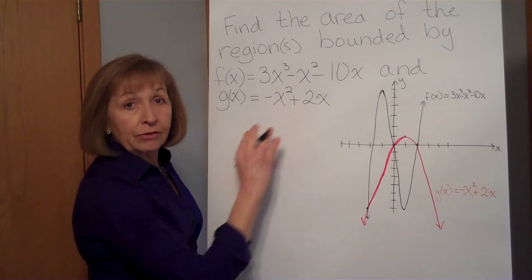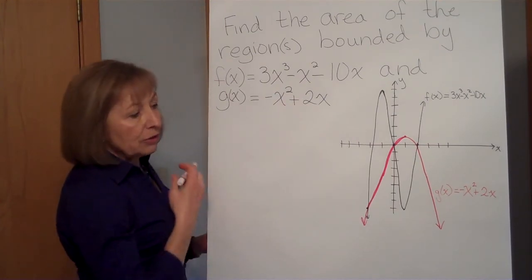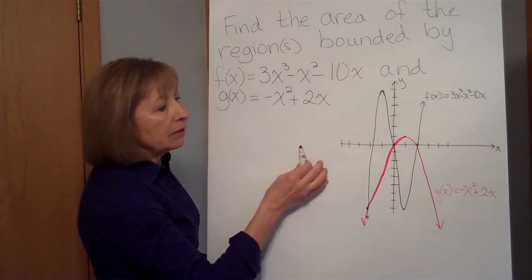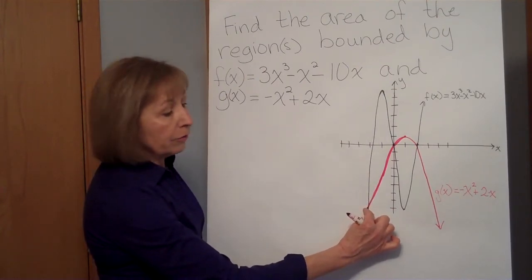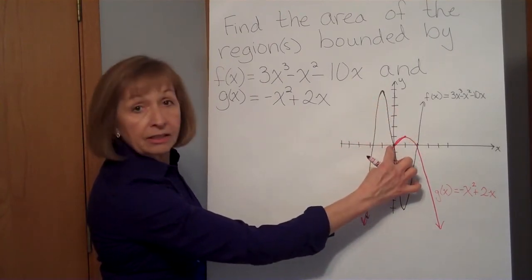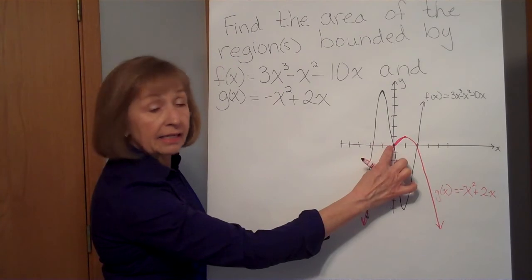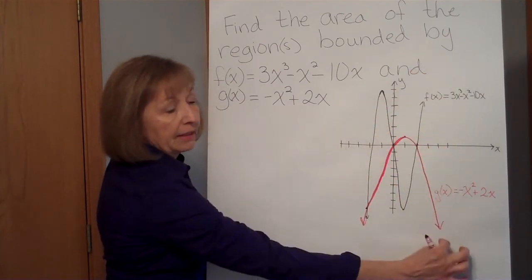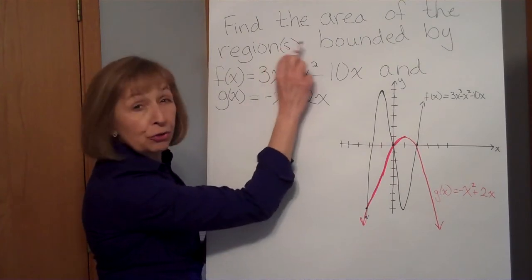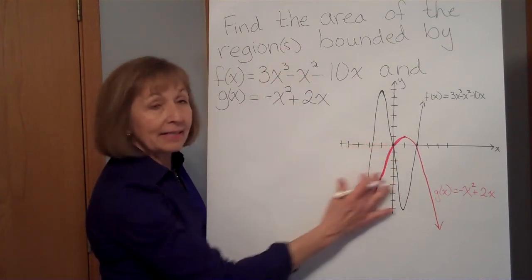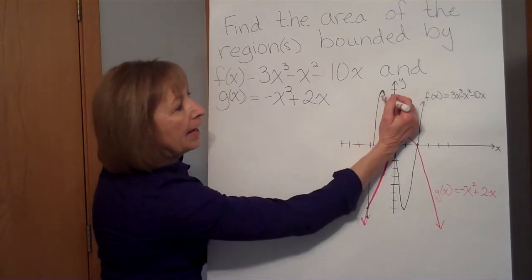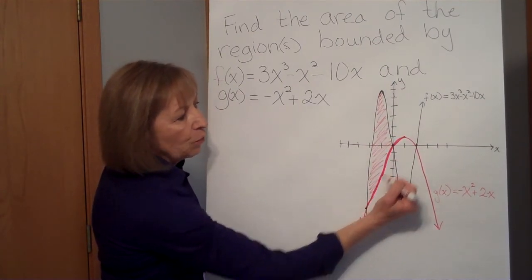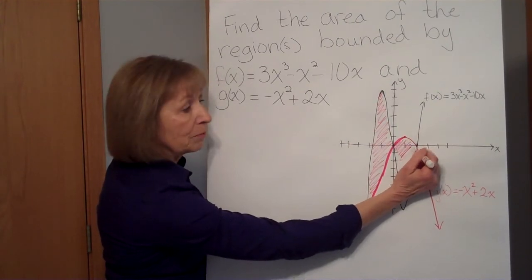Notice there aren't any intervals given for this problem. So when I graph it I look to see whether they have a region that's enclosed by the two curves. We can see the curves intersect at one point, then there's an enclosed region until the next intersection, and then they intersect again before going off in their unbounded directions. So there are actually two regions we're interested in finding — this is an example where the curves are intertwined.